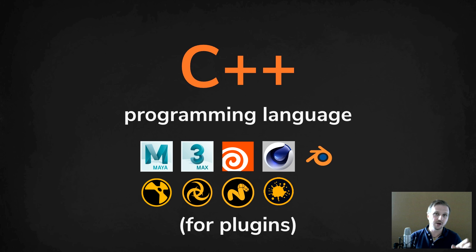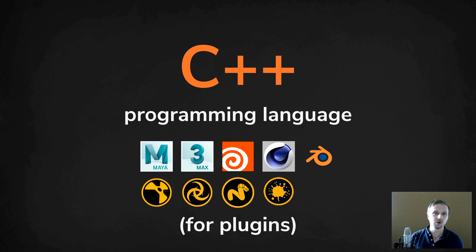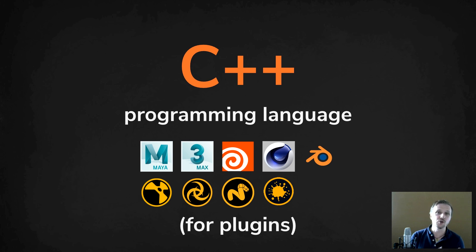The difference between a scripting language like Python and a programming language like C++ is the compiling. With a scripting language, you just write the code and Maya will use it instantly. With C++, you need to compile it — translating readable code into machine code. The benefit is that it runs much faster because it's already translated for the computer to read.